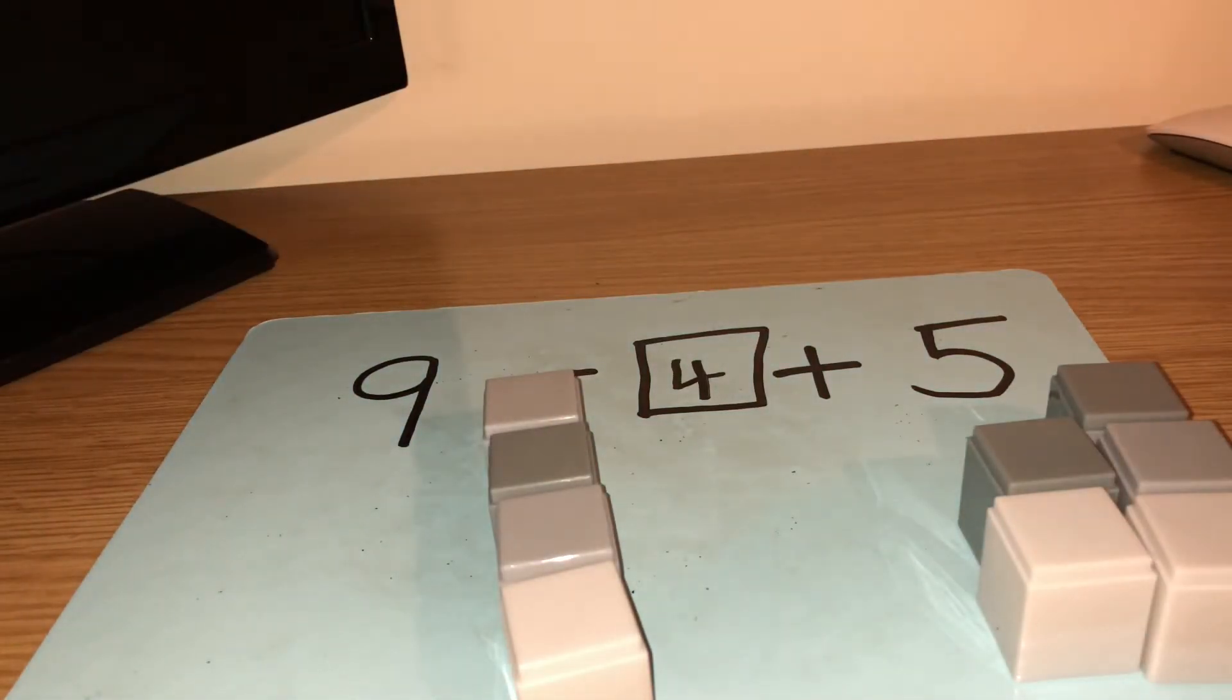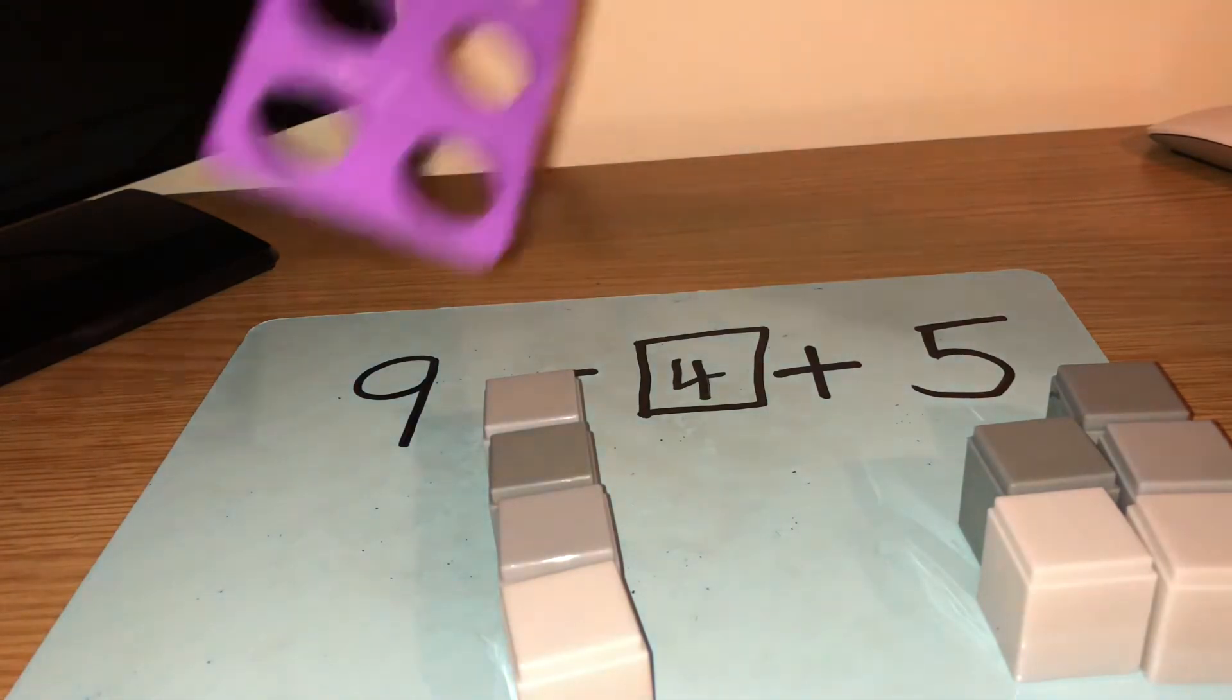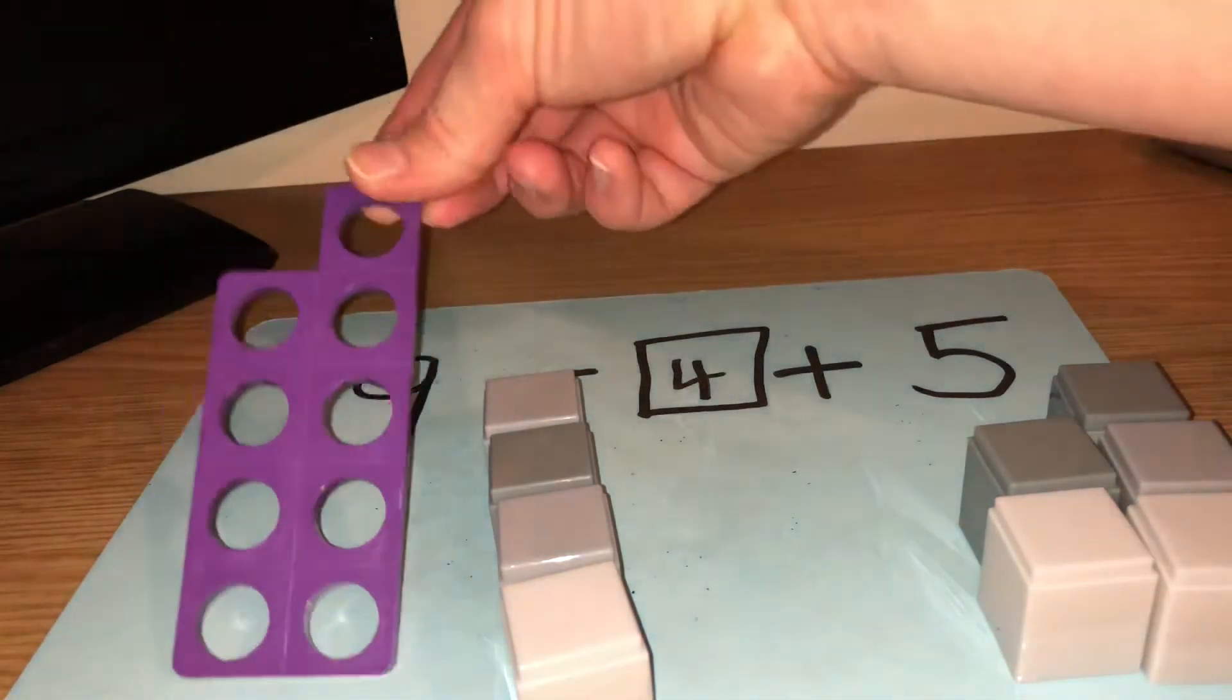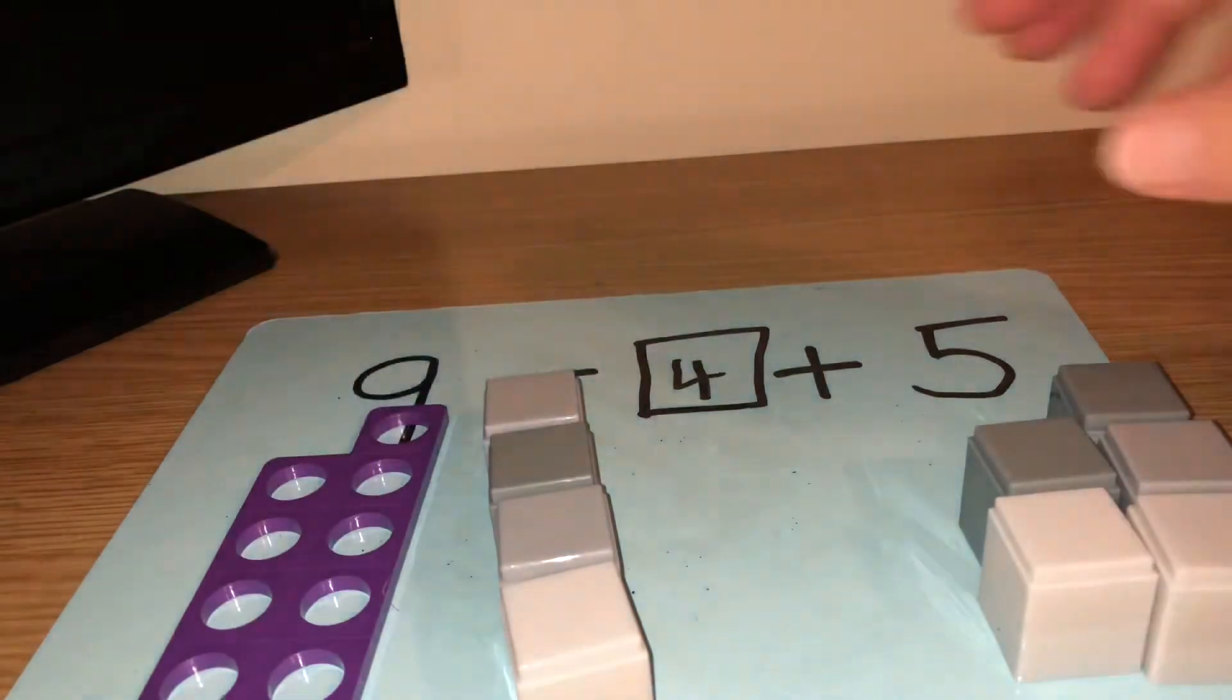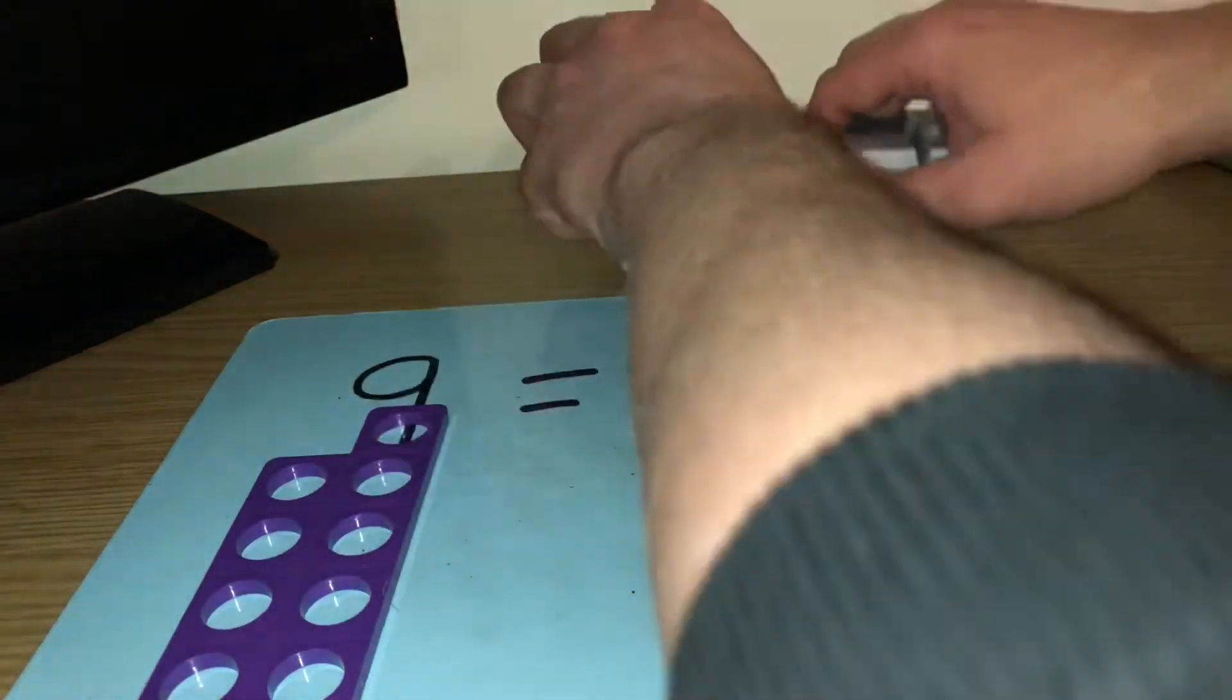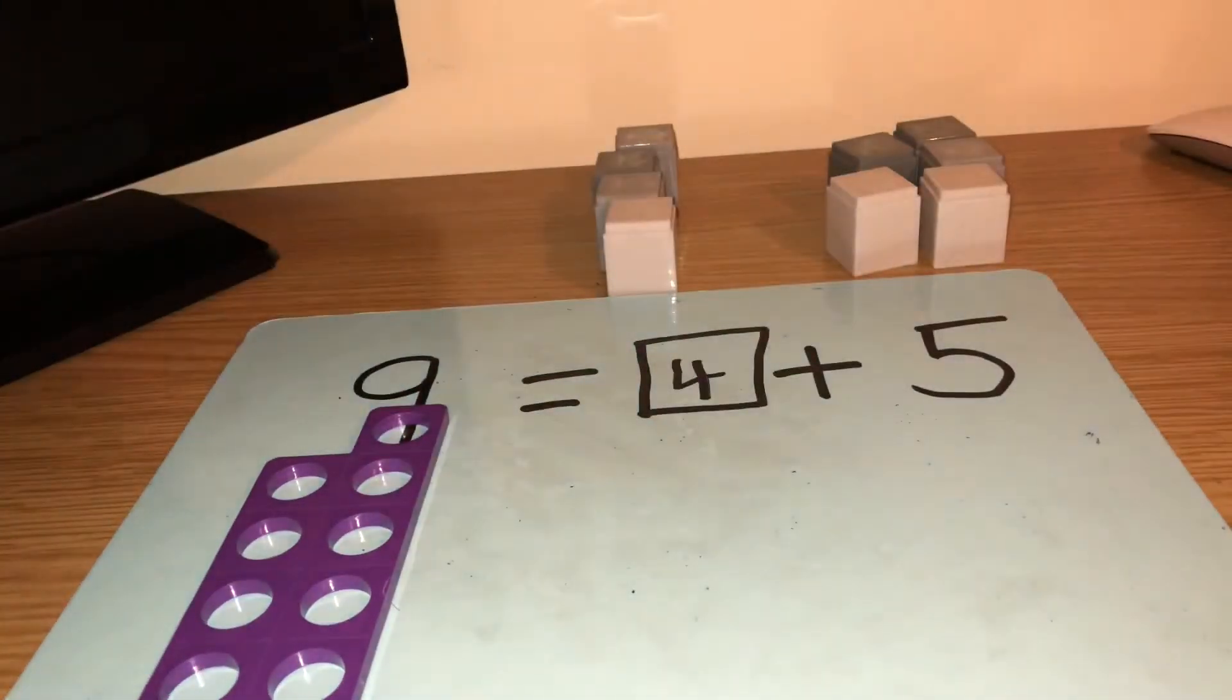I'm going to prove that to you with my Numicon. So I'm going to put the 5, sorry, the 9 there. You've got the 9 haven't you? Let's move these blocks a minute. And then we knew that we had number 5.